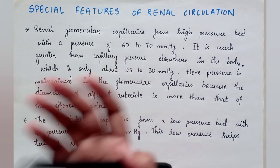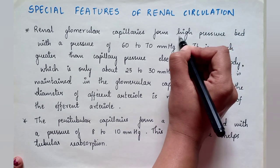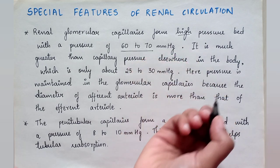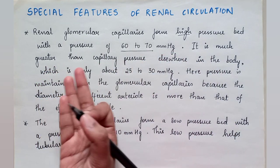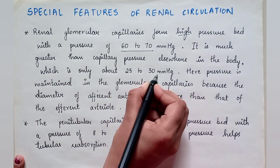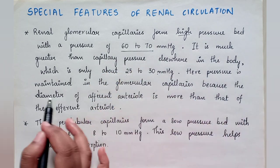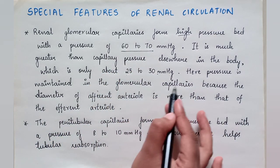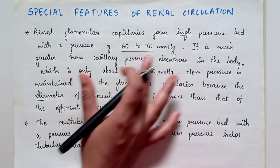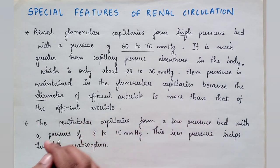Special features of renal circulation: renal glomerular capillaries form a high pressure bed with a pressure of 60 to 70 mmHg. This is much greater than the capillary pressure elsewhere in the body, which is only about 25 to 30 mmHg. This pressure is maintained in the glomerular capillaries mainly because the diameter of the afferent arteriole is greater than that of the efferent arteriole.